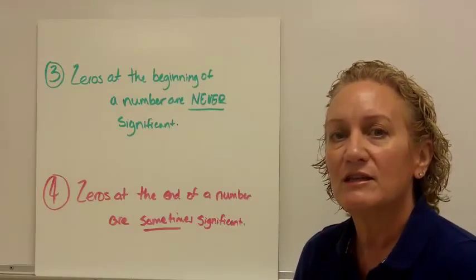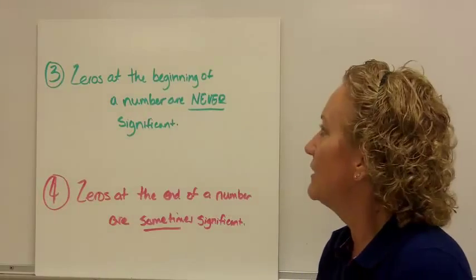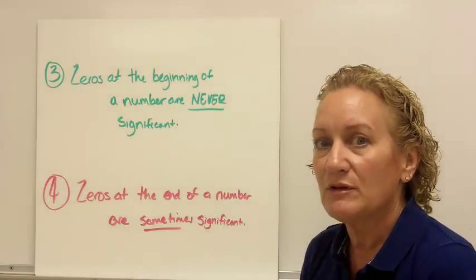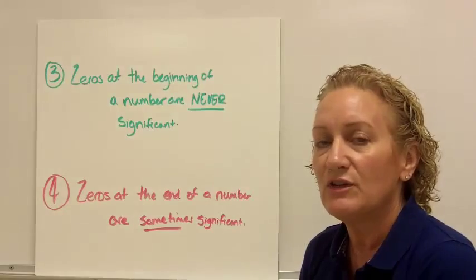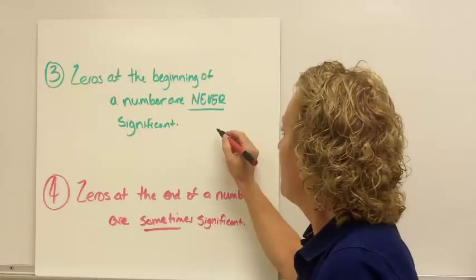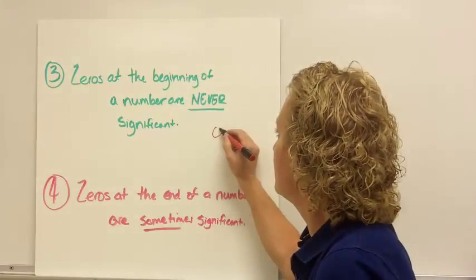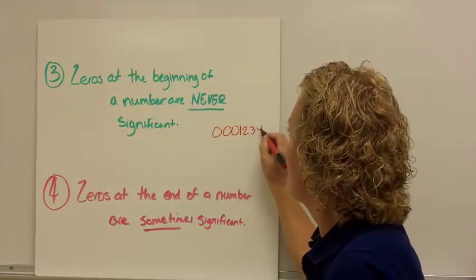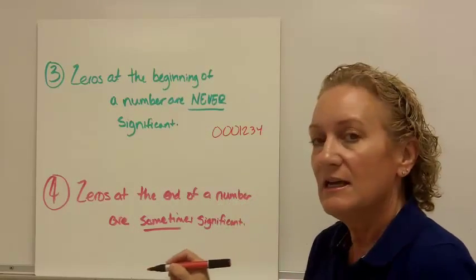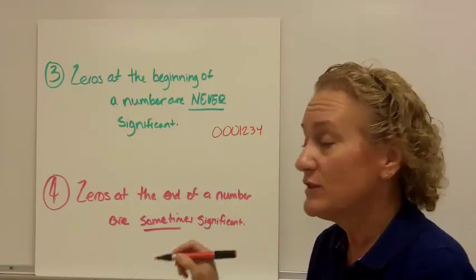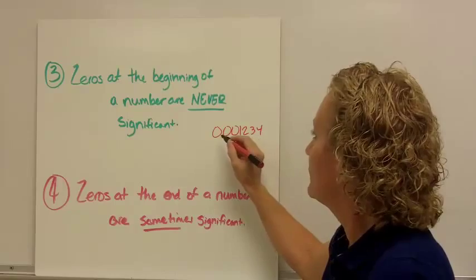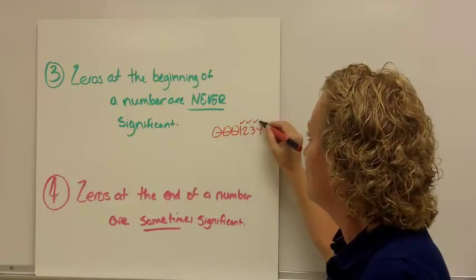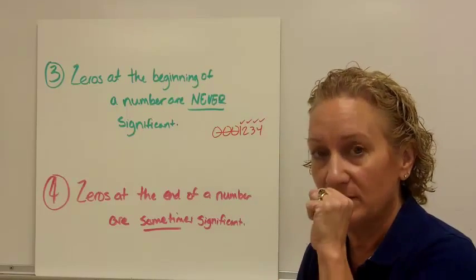Rule number 3: zeros at the beginning of the number are never significant. This is really important because this is the one you're going to mess up the most. So, if my number was 0001234, that has 4 significant figures. Those zeros are non-significant — 1, 2, 3, 4 significant figures.